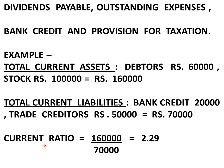Current ratio is equal to current assets divided by current liabilities. Total current assets equal rupees 1,60,000 divided by total current liabilities of rupees 70,000, which gives 2.29. So friends, I hope you have understood the concept of current ratio.